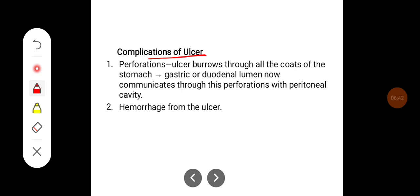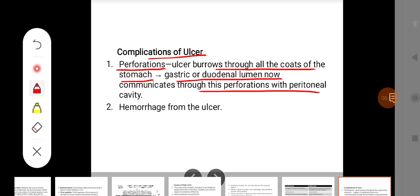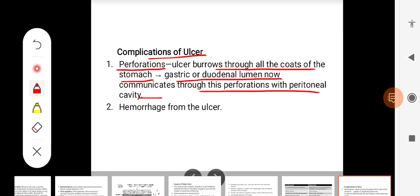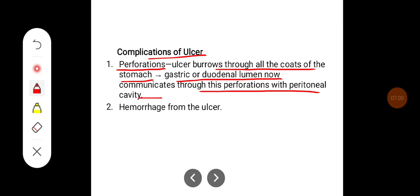Some complications of peptic ulceration include perforation, where the ulcer burrows through the coats of the stomach, causing the gastric or duodenal lumen to communicate with the peritoneal cavity. There can also be hemorrhage from the ulcer.